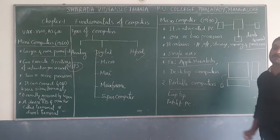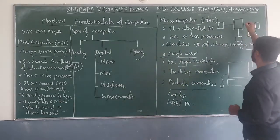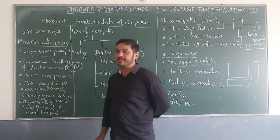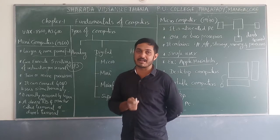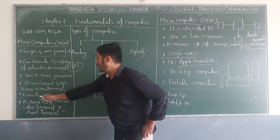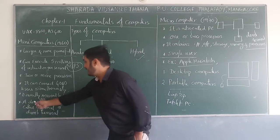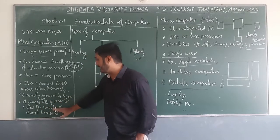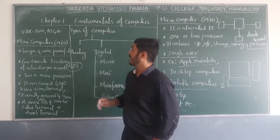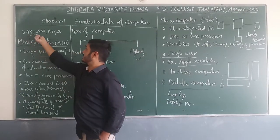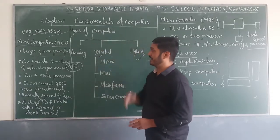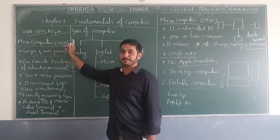A dumb terminal has no processors of its own — it uses the processor from the mini computer. The mini computer can connect four thousand users simultaneously. The device with keyboard and monitor used to access it is called a terminal or dumb terminal. Examples of mini computers are VAX-11/780 and AS/400.